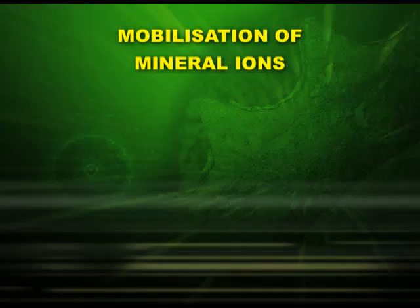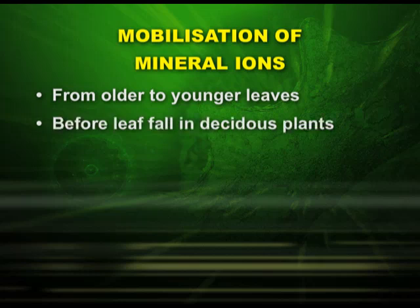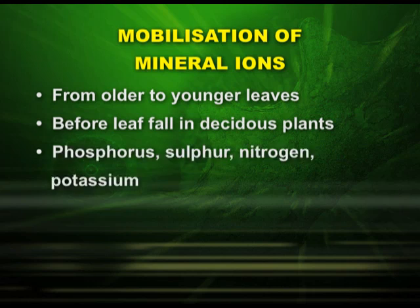In plants, mineral ions can be mobilized or immobilized. In the case of mobilization of mineral ions, they are mobilized from older to younger leaves; second, before leaf fall in deciduous plants; and thirdly, the elements which are mobilized are phosphorus, sulphur, nitrogen, and potassium.